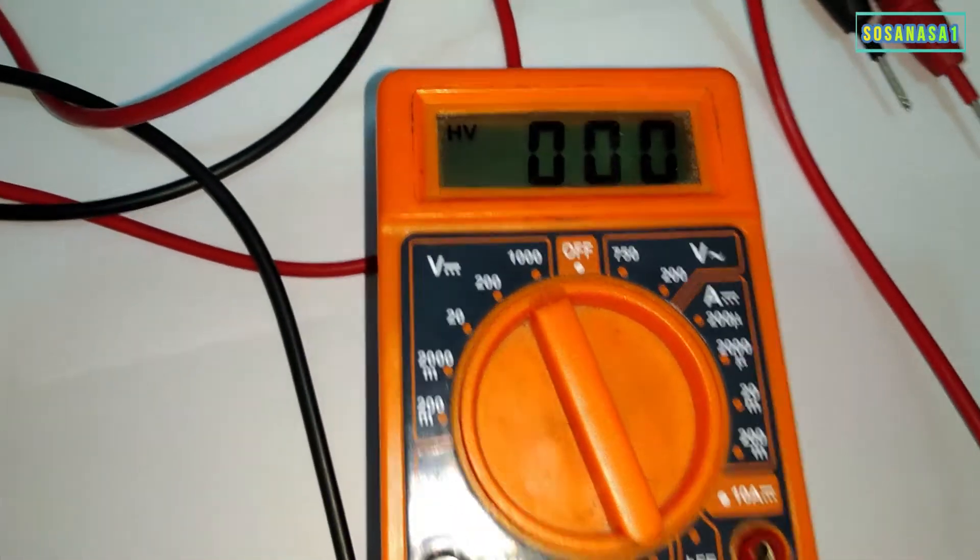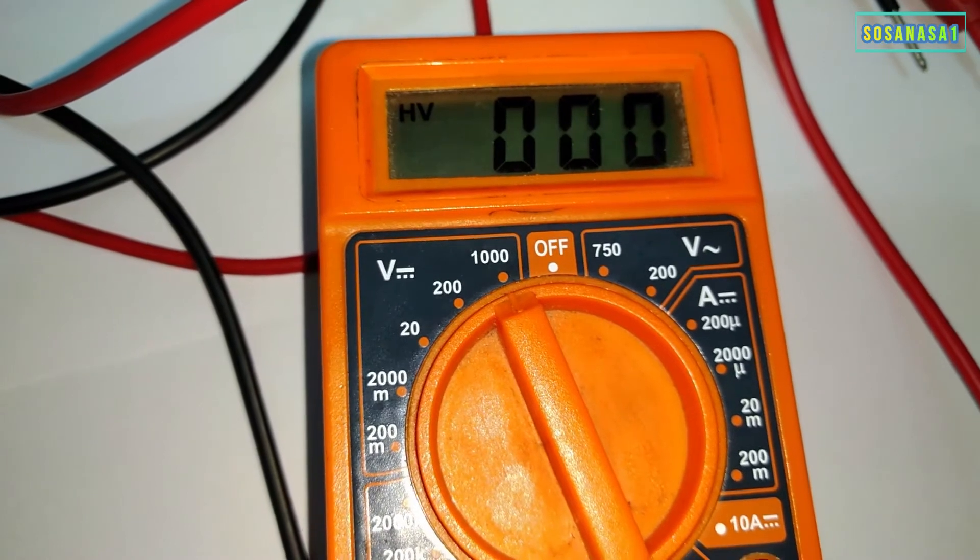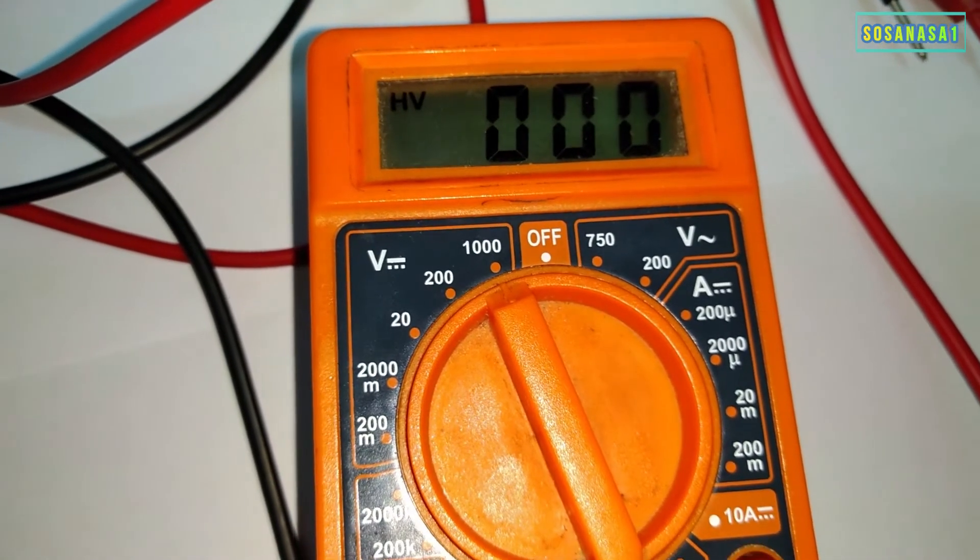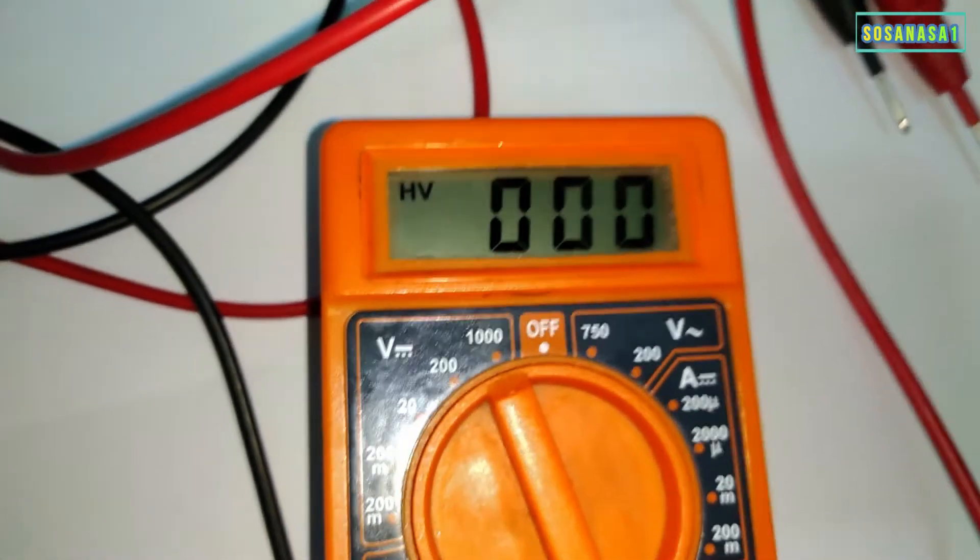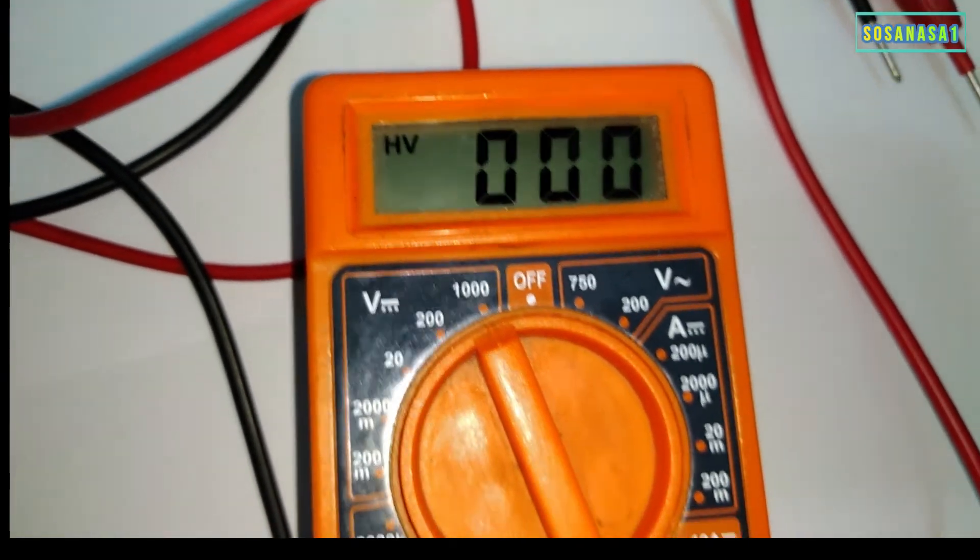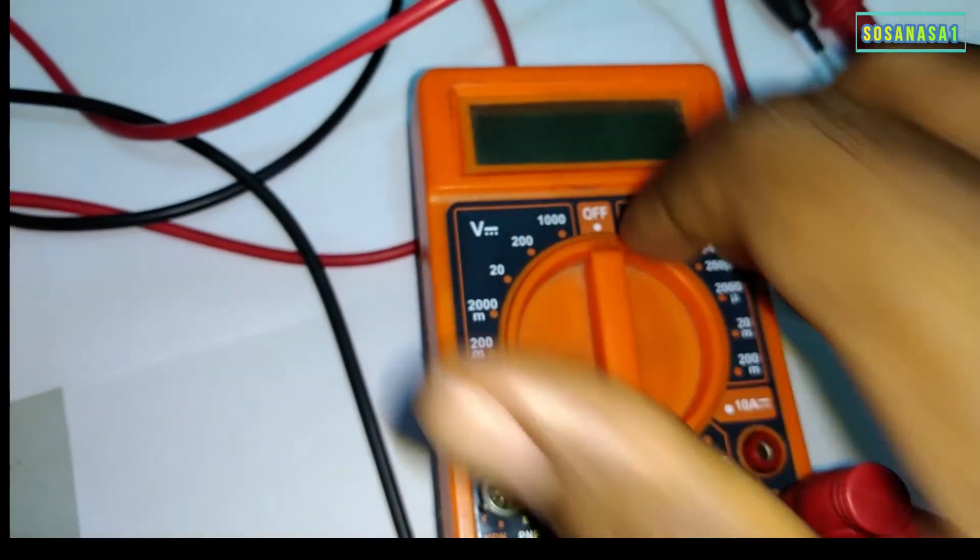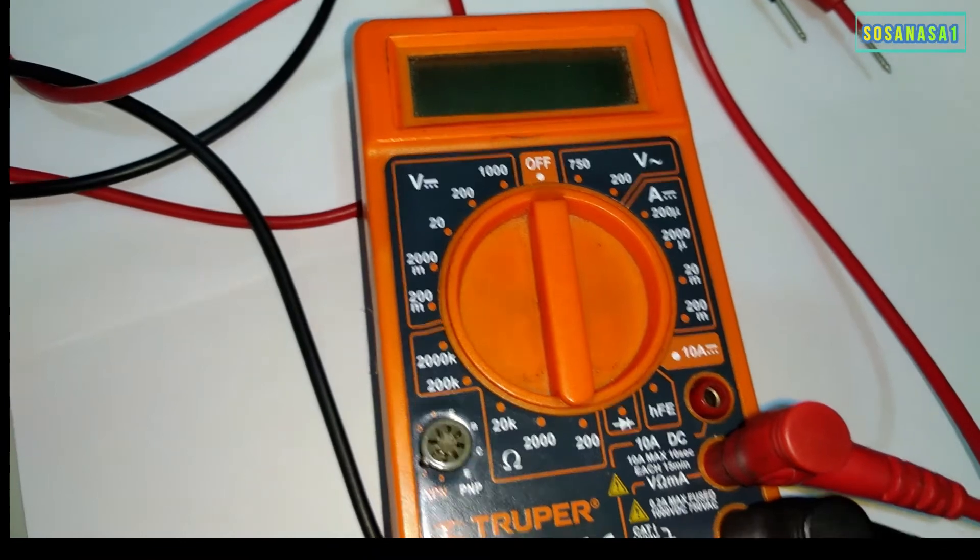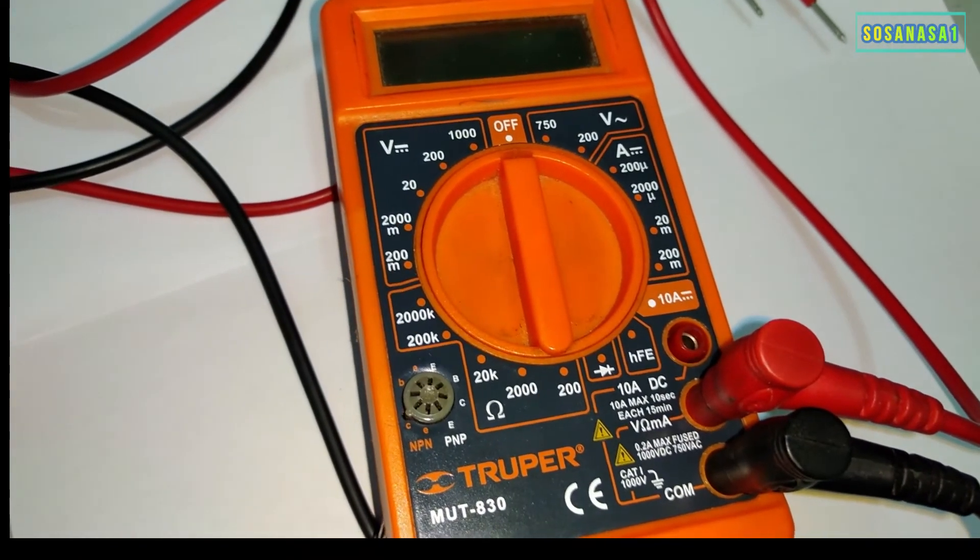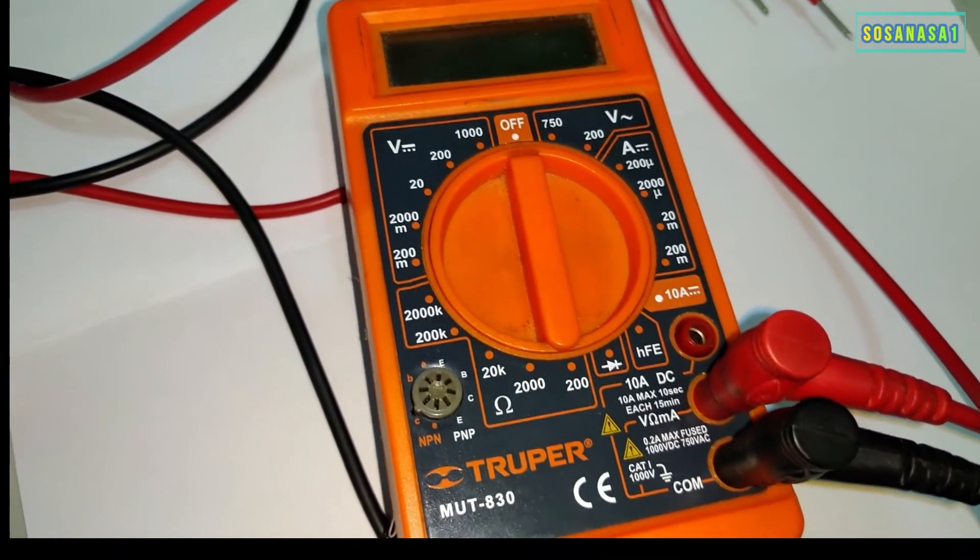We must be careful because 1000 volts is a lot of energy, and for that reason the multimeter shows it on the screen. This is all for today. Thank you for watching the video.